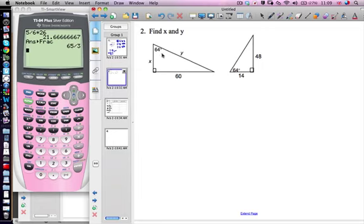So we need to look for our corresponding lengths. And here we can see we know the one that's opposite the 64 degrees. So that's 60 is corresponding with that 48. They're in the same position relative to the angles.